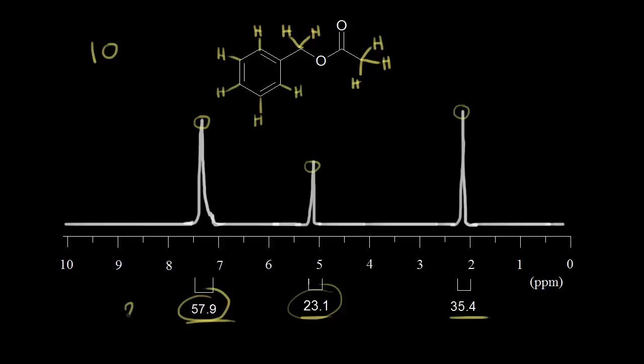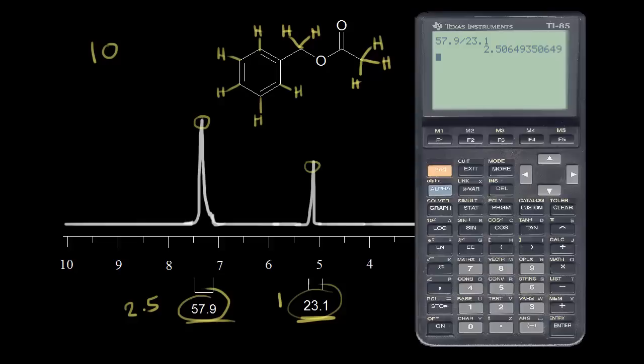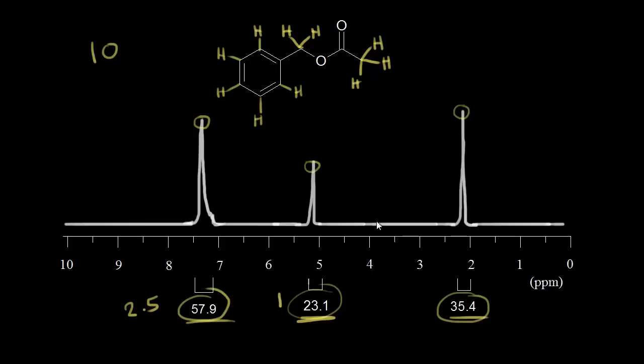So I'll write 2.5 right here. 23.1 divided by 23.1 is obviously equal to one. And then finally, 35.4, we need to divide that by the smallest integration value. So 35.4 divided by 23.1 gives us about 1.5. So we have 1.5 here.